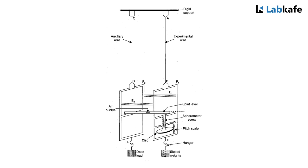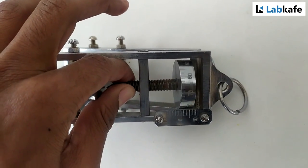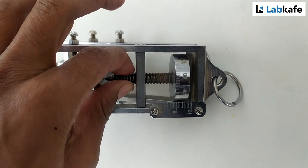A spirit level rests horizontally with its one end hinged in frame F2. The other end of the spirit level rests on the tip of the spherometer screw fitted in frame F1. The spherometer screw can be rotated up and down along a vertical pitch scale marked in millimeters.